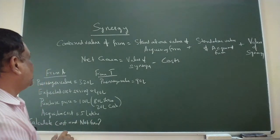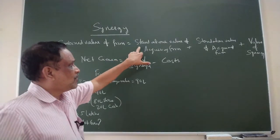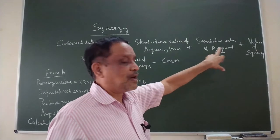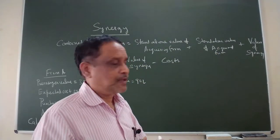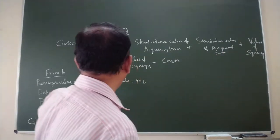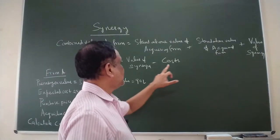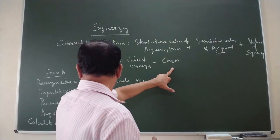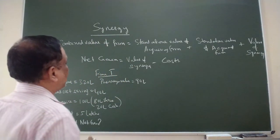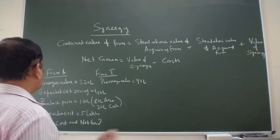The formula for synergy is combined value of the firm after the merger, stand alone value of acquiring firm, that is the company which is acquiring, and stand alone value of acquired firm, the company which is to be acquired. Then plus value of synergy, and net gain from synergy is value of synergy minus cost.